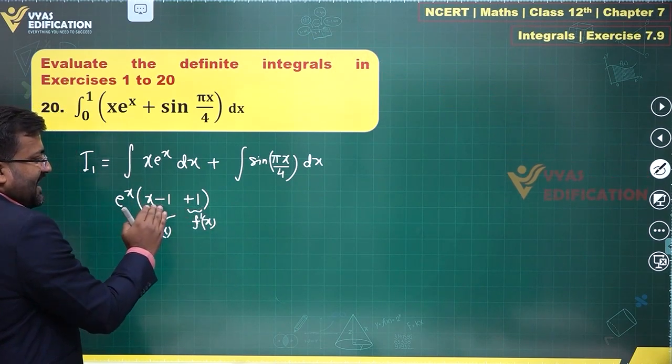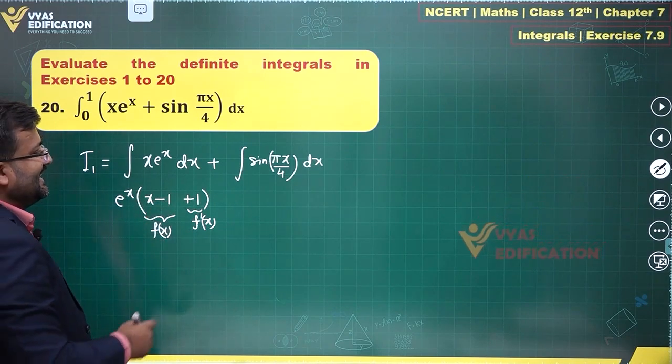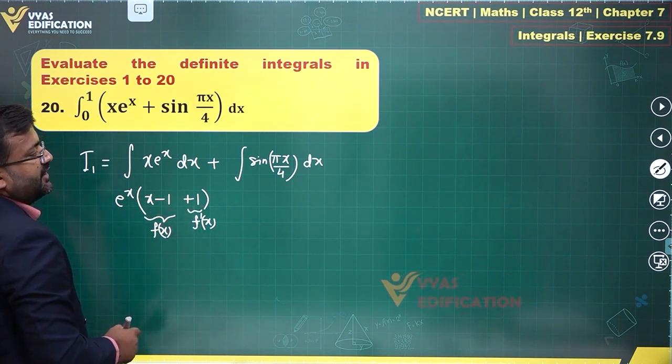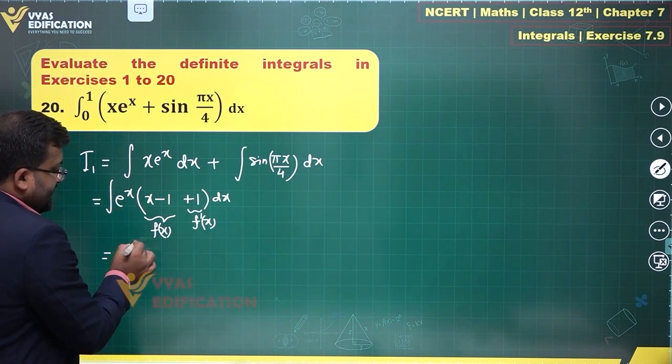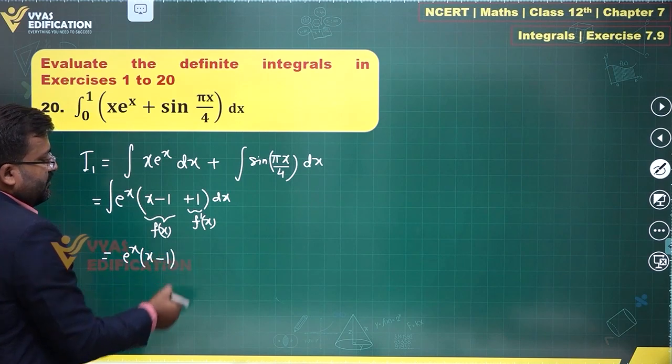So e^x[f(x) + f'(x)] - if you integrate this whole expression dx, this integral will be e^x·f(x), which is e^x times (x - 1). That's one part.